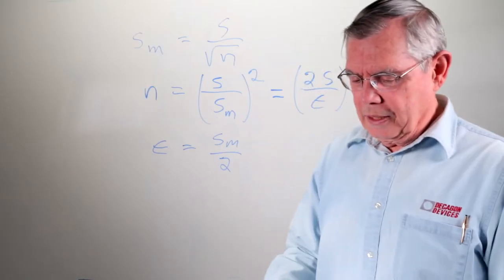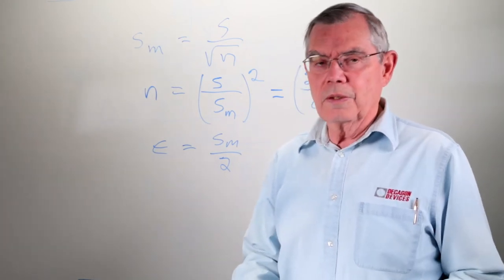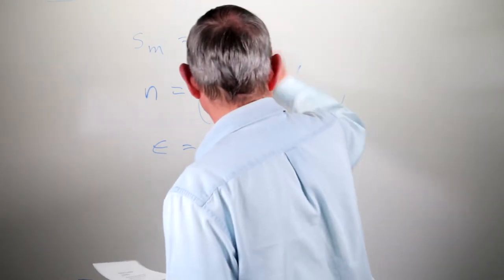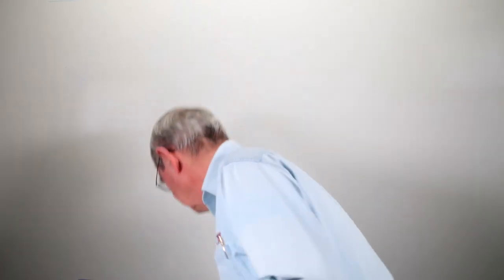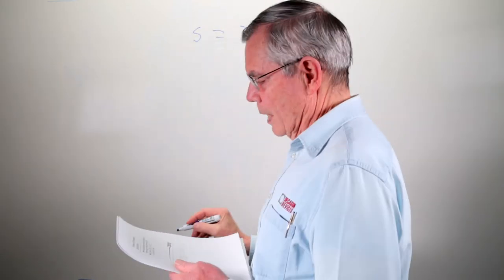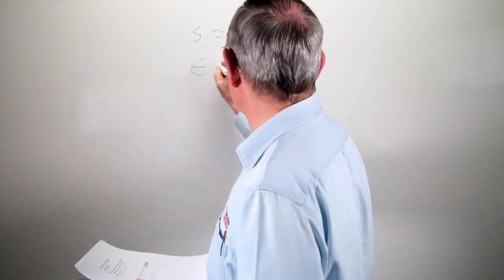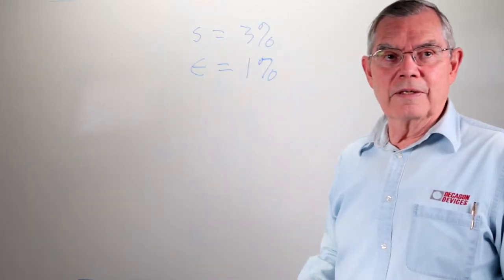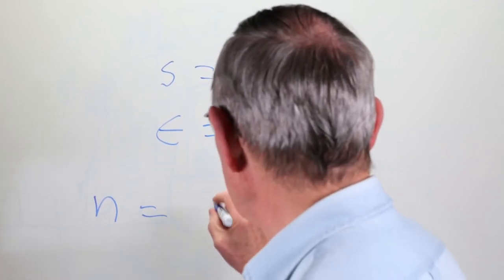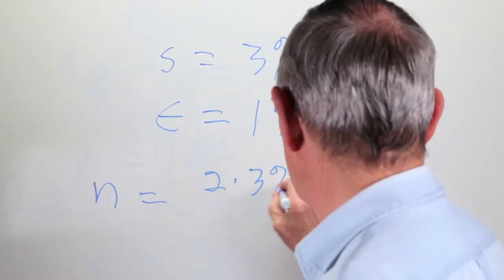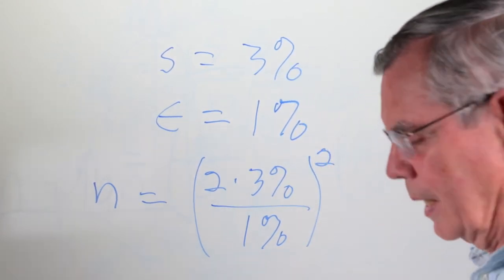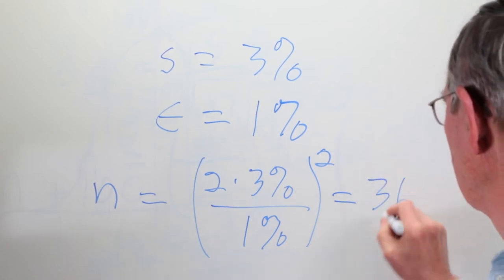If we work through a problem: how many samples would we need to know the water content within 1%, if the standard deviation is 3%? The standard deviation is 3% and the error value we want is 1%. We want 95% confidence that we're within 1%, so the number of samples is (2 × 3% / 1%)², which comes out to be 36 samples.